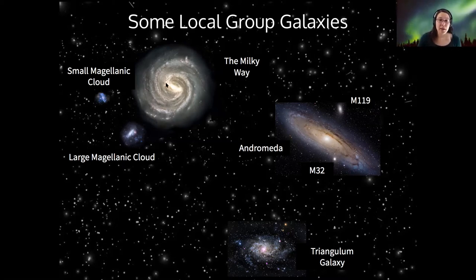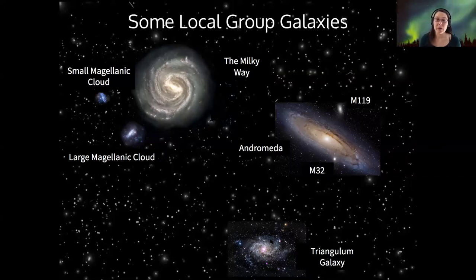So we've got our Milky Way and its satellite galaxies, the Small Magellanic Cloud and the Large Magellanic Cloud. And then Andromeda actually has a couple of satellites too, M32 and M119, and the Triangulum Galaxy is another one in our group.